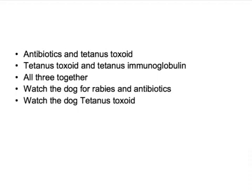The options are: option A is antibiotics only; option B is tetanus toxoid; option C is tetanus toxoid and tetanus immunoglobulins; and option D is watch the dog for rabies, give antibiotics, and give tetanus toxoid. What will you do to treat this patient?